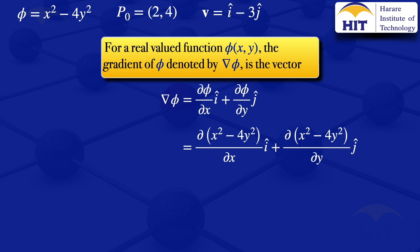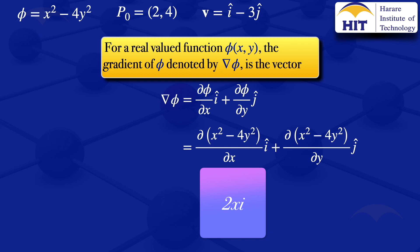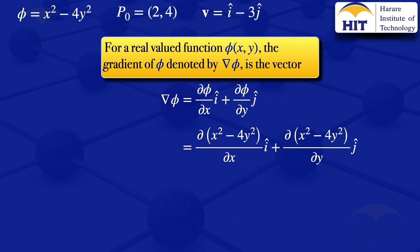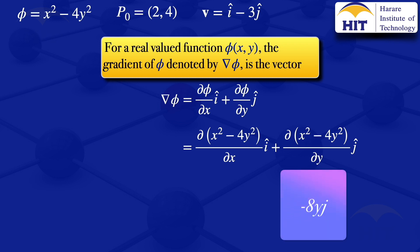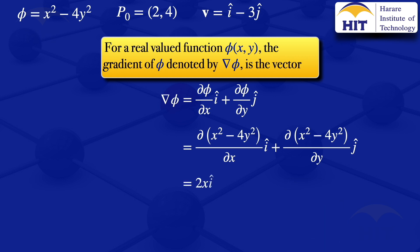The next step is to evaluate those partial derivatives. Differentiating with respect to x and treating y as a constant, we obtain 2xi. Differentiating with respect to y and treating x as a constant, we obtain minus 8y. So our result is grad φ = 2xi minus 8yj.